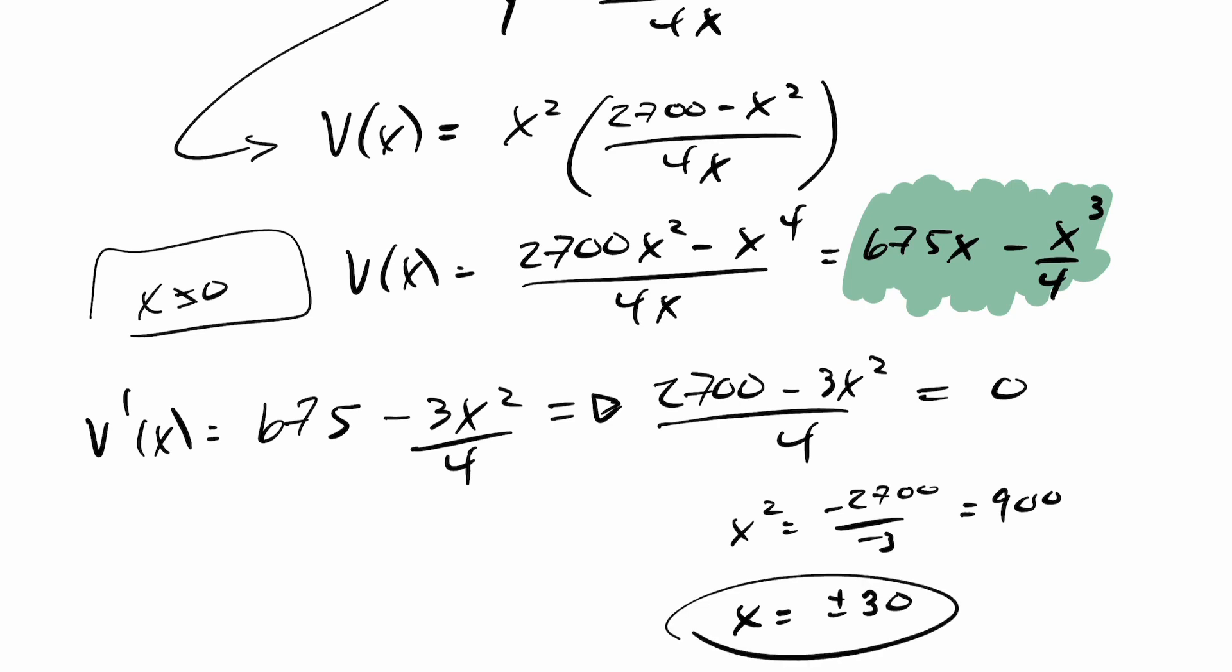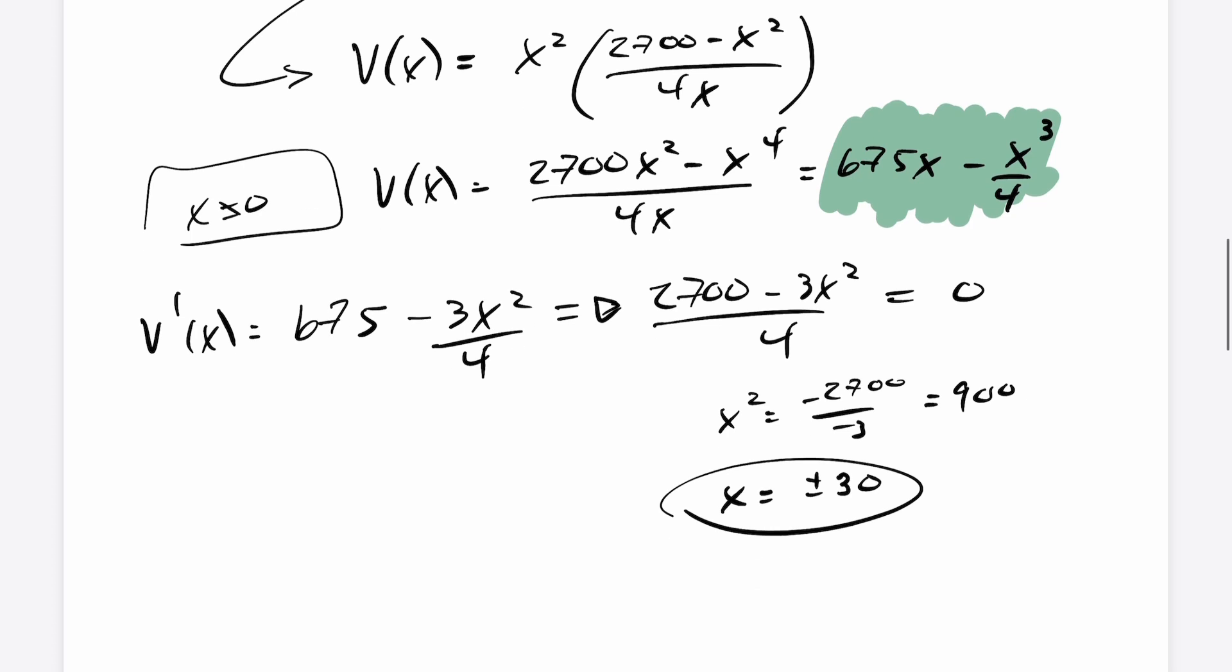Obviously, here we have the situation that X represents a length. This is the length of a box, dimensions of a box here. So X can only be 30. So my critical point that I've found here is X equals 30.